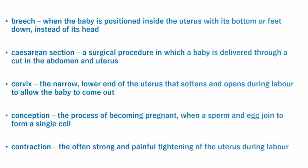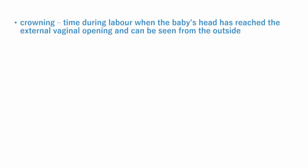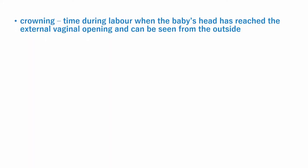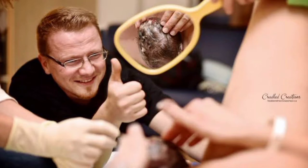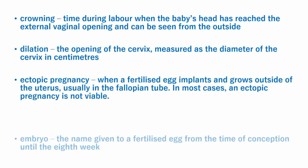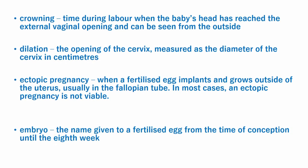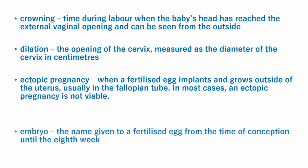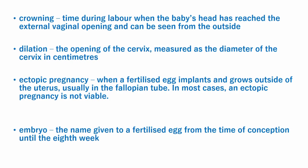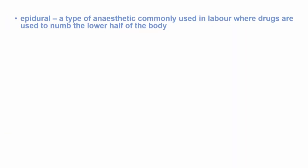Contractions during labor cause dilation and help push the baby through the birth canal. Crowning is the time during labor when the baby's head has reached the external vaginal opening and can be seen from outside; it occurs in the second stage of labor when the cervix is fully dilated. Ectopic pregnancy is when a fertilized egg implants and grows outside of the uterus, usually in the fallopian tube; in most cases it is not viable. Embryo is the name given to a fertilized egg from the time of conception until the eighth week.